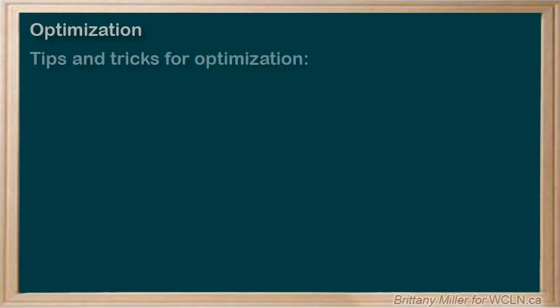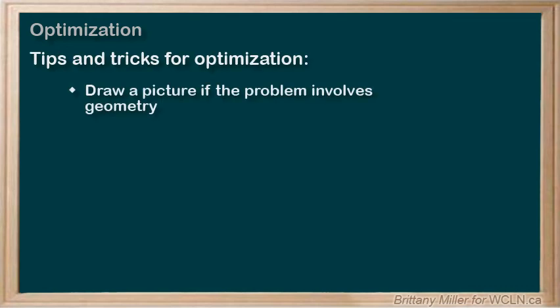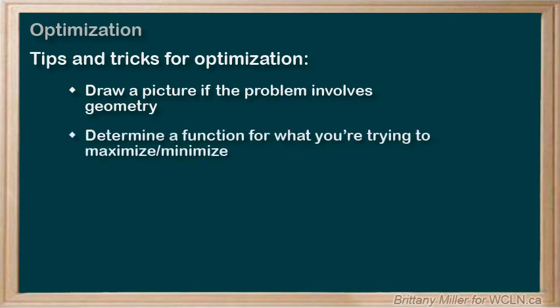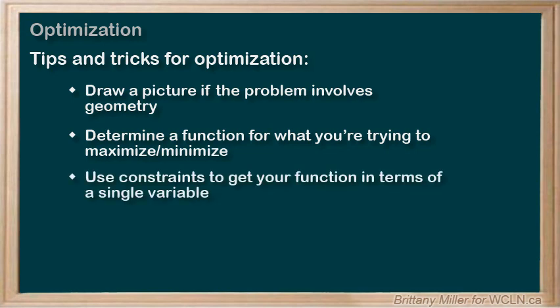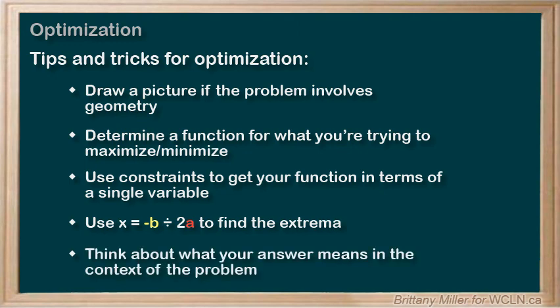That doesn't cover all of the types of optimization problems you might encounter. Here are some general steps to keep in mind: Draw a picture if the problem is talking about geometry. Determine a function for what you're trying to maximize or minimize. Use constraints from the problem to get your function in terms of just one variable. Use X equals negative B divided by 2A to find the extrema of your quadratic, or graph it using an online tool. Think about what your answer means in the context of the problem and solve for any other values that the question is asking for.